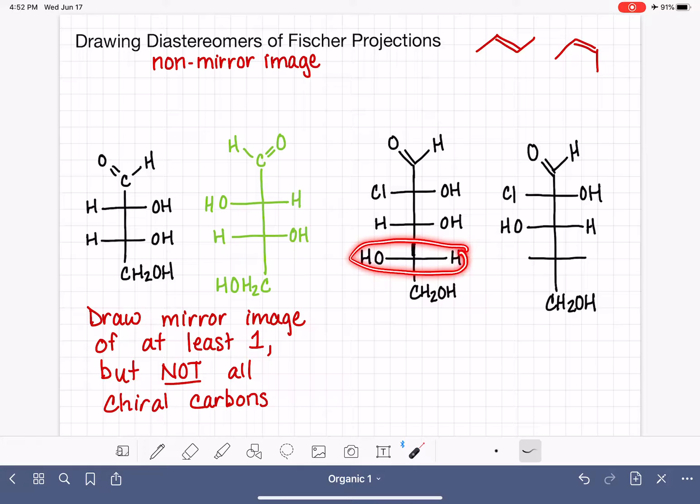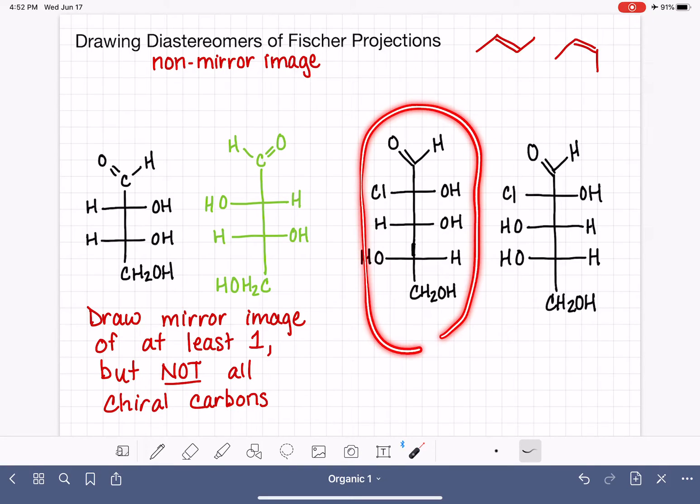And then for the remaining, which in this case is just one, we could do whatever we want. We could mirror this or we could not mirror this. It's totally up to us. So we have a lot of possibilities of correct answers for this particular molecule in terms of drawing a diastereomer. All that matters is that at least one of the carbons has been reversed, but not all of the carbons has been reversed.